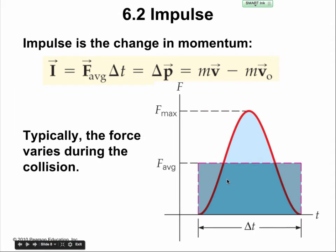The impulse is the change in momentum. The force that's generated is called an impulse — but the impulse is just the change in momentum. The force is the change in momentum over time, and if we multiply both sides by time, then force times time equals the impulse, which is just the change in momentum.